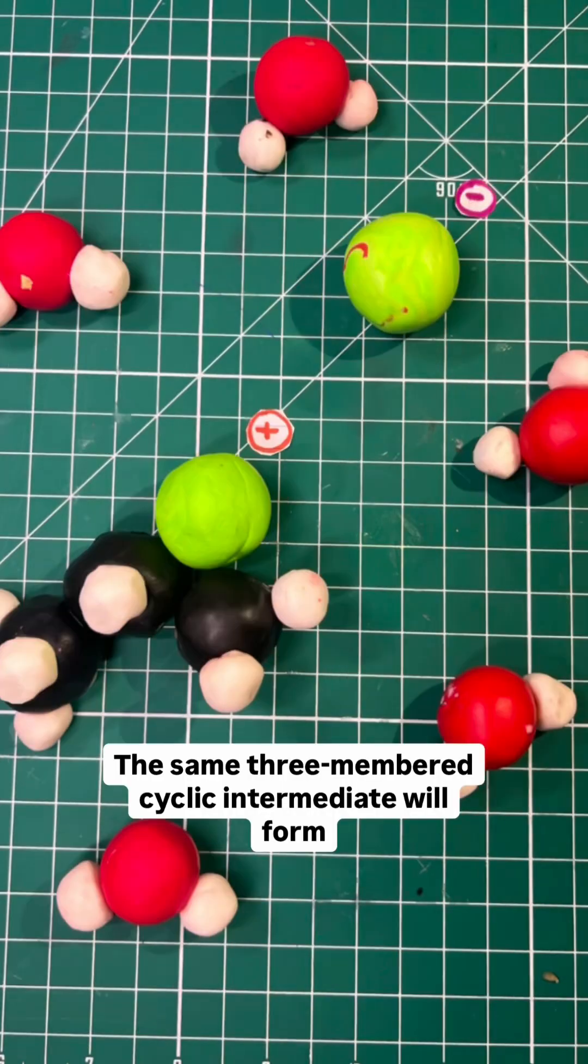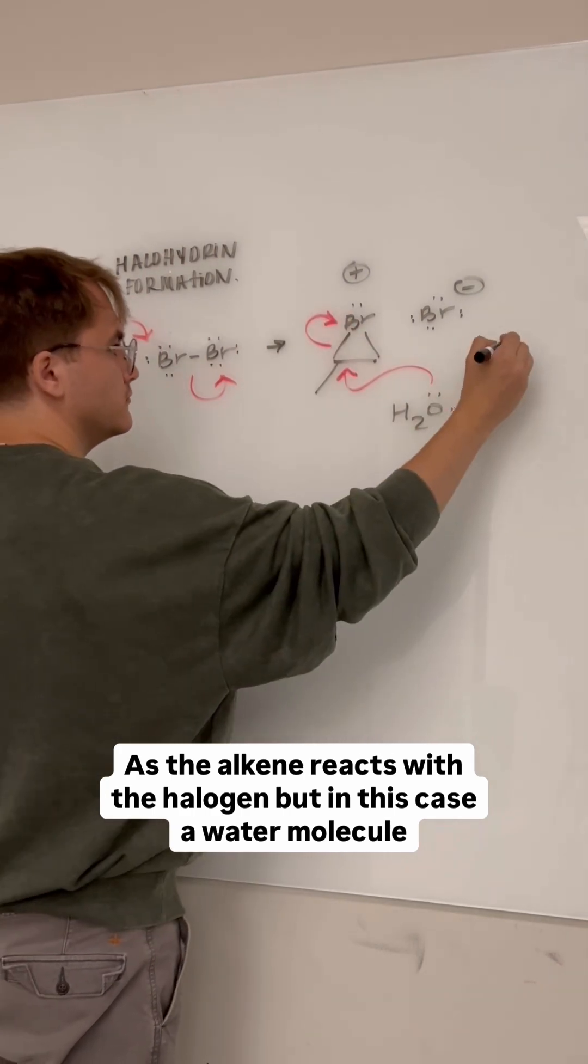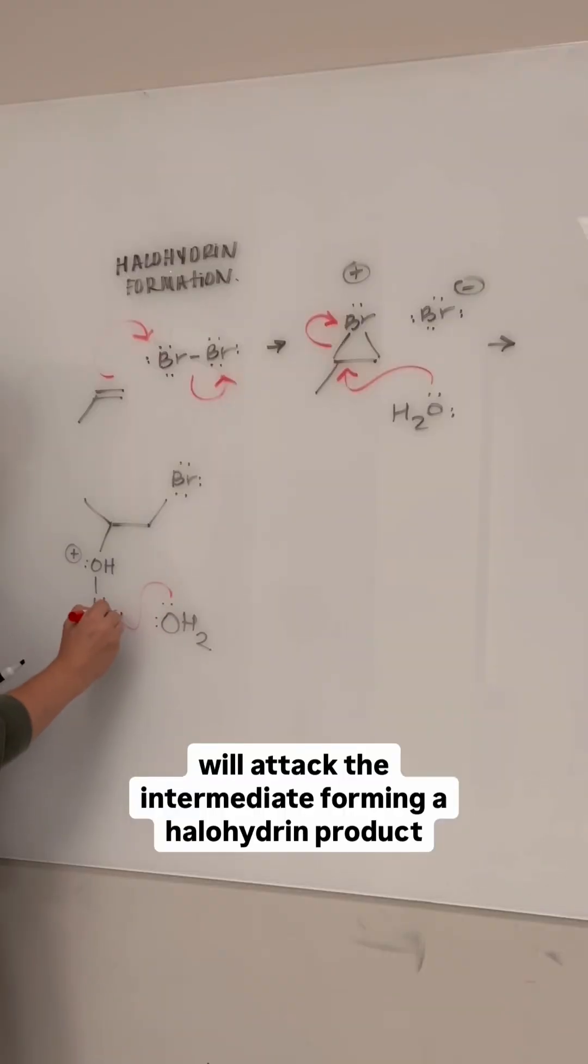The same three-membered cyclic intermediate will form as the alkene reacts with the halogen, but in this case, a water molecule will attack the intermediate, forming a halohydrin product.